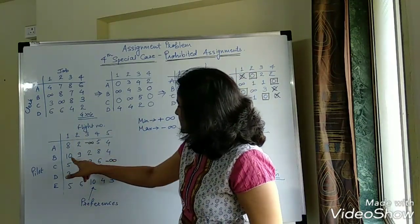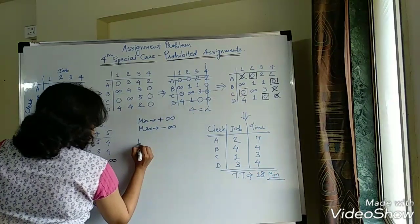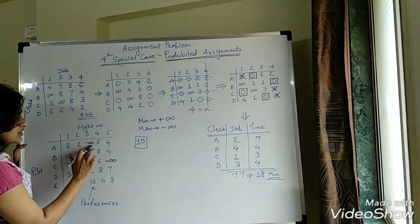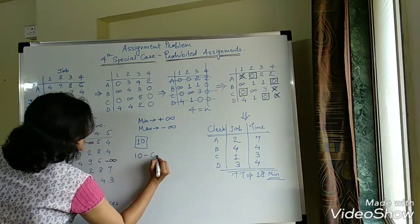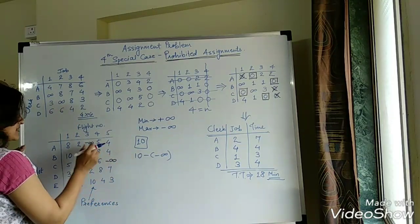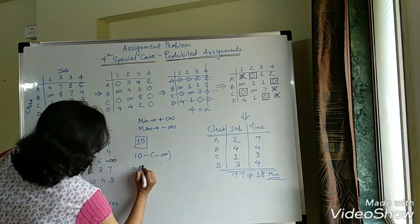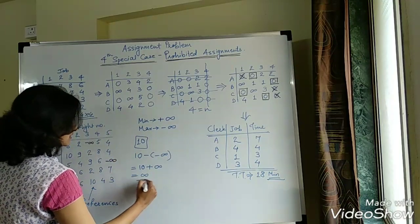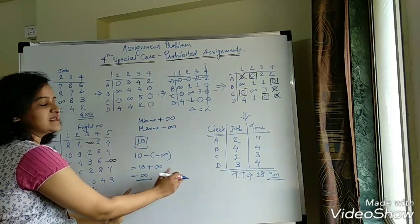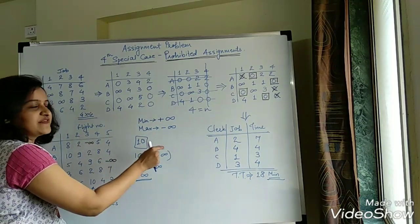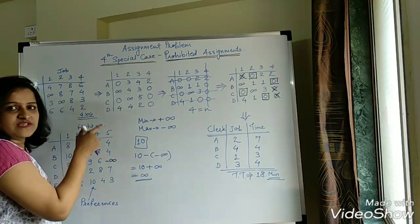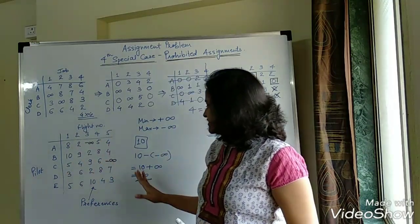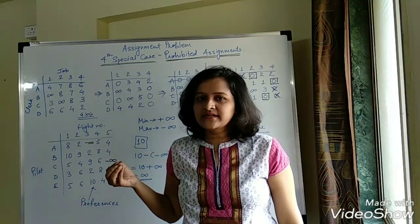When you subtract all elements from 10, the positions with minus infinity become: 10 minus (minus infinity) = 10 + infinity = plus infinity. So automatically, when the maximization matrix is converted to a minimization matrix, those prohibited positions become plus infinity — exactly what is required for the minimization problem. Try solving this at home. I've given you the hint on how to get started, and I will also upload the solution in the description box.